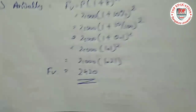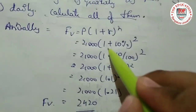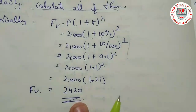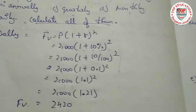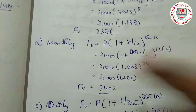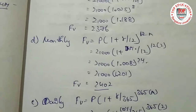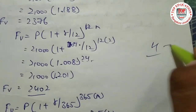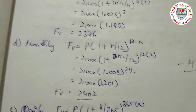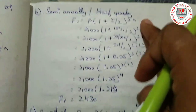For annually, we use the same compound interest formula: principal amount one plus ten percent for two years. We do each and every step because marks are awarded for showing steps. If you write only two or three lines, the examiner may cut marks. But if you show every step clearly, they will give full six marks.